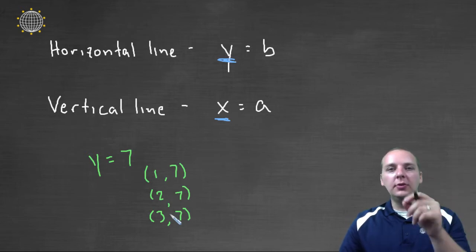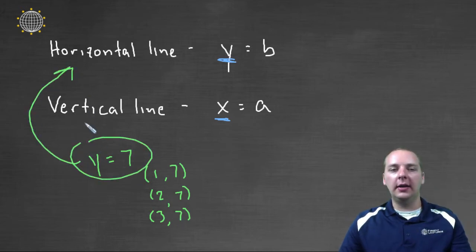One seven, and then two seven, and then three seven. They all have the same height. So this would be a horizontal line. And sure enough, it's y equals a constant.